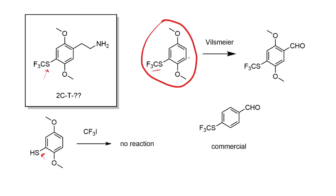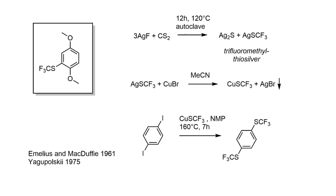If we could obtain a building block with an SCF3 group, you could imagine it undergoing a Vilsmeier formylation or similar to afford the required benzaldehyde, and the fact that some commercially available benzaldehydes already bear this group gives hope. Going back to the early literature, the best route into these compounds is via trifluoromethylthiosilver. Anelius and McDuffie in 1961 took silver fluoride and carbon disulfide in an autoclave — this reaction is presumably driven by formation of insoluble silver sulfide — to obtain trifluoromethylthiosilver.